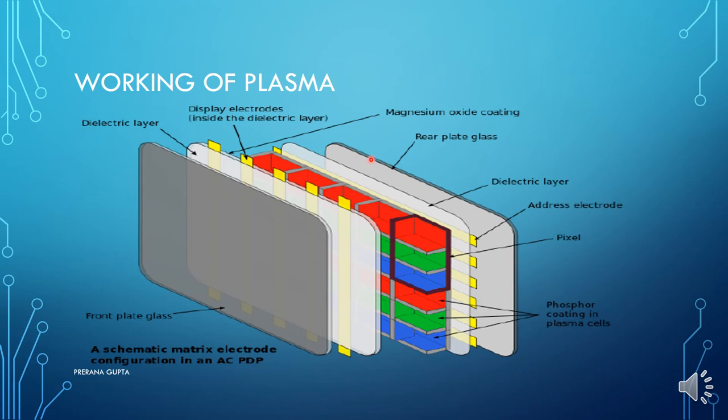Now, working of plasma. As I have told you, there is a rear plate and a front plate. Above it is an address electrode. This is also an electrode. Inside is the dielectric layer, and here is a pixel—red, green, blue. This is a pixel. There will be a phosphorous coating on it. Then there will be a magnesium oxide coating on it. These are the components.